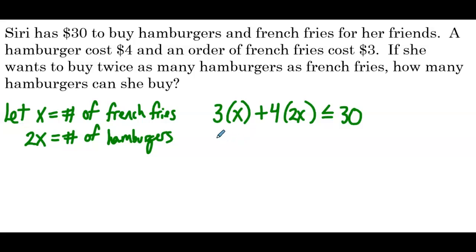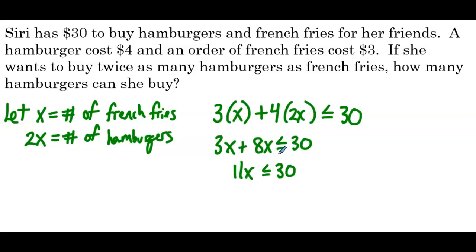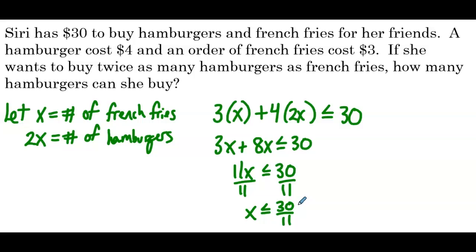We can simplify the left side: 3x plus 8x is less than or equal to 30, so 11x is less than or equal to 30. Divide both sides by 11 — x is less than or equal to 30 over 11. Now, it doesn't work out perfectly. 30 over 11 is a decimal, approximately 2.8. We can't go into a restaurant and order 2.8 orders of french fries — that doesn't make sense in context.